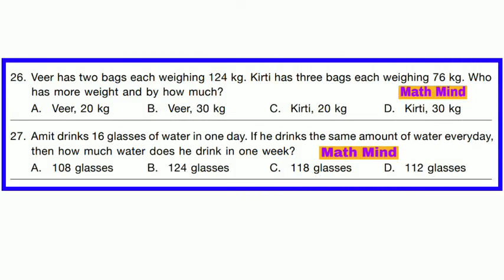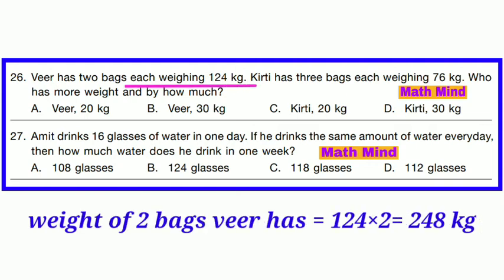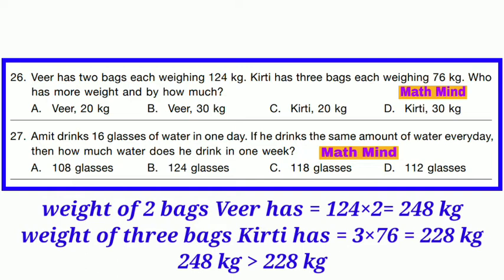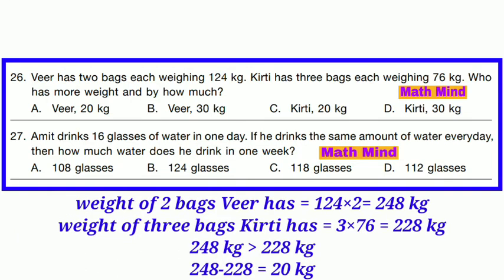Question No. 26: Beer has 2 bags each weighing 124 kg. Kirti has 3 bags each weighing 76 kg. Who has more weight and by how much? Beer's total = 124 × 2 = 248 kg. Kirti's total = 76 × 3 = 228 kg. 248 − 228 = 20 kg. Beer's bags have more weight by 20 kg. Option A is correct.